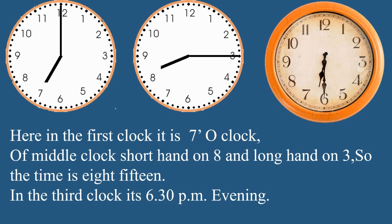Let me talk about the first clock. You can see that in the first clock the short hand is on 7 — that is the hour hand. And the long hand? It is on 12, and the long hand is the minute hand. So the time in the first clock is 7 o'clock exact. Now, what about the middle clock? The short hand is on 8 and the long hand is on 3. So students, the time is 8:15.